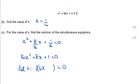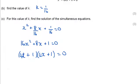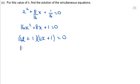And here we need +1 in each bracket. That will give us the 8x we need, so that's the correct factorisation. That tells us that x = -1/4.